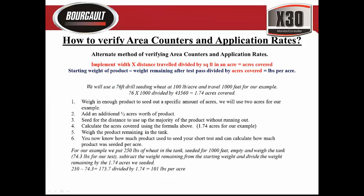For an alternate method, we'll use a different formula: implement width times distance traveled divided by the square feet in an acre (43,560) equals the area covered. Once we have our area covered, we can calculate the seeding rate. For example, a 76-foot drill seeding wheat at 100 pounds per acre traveling 1,000 feet: 76 × 1,000 ÷ 43,560 = 1.74 acres.